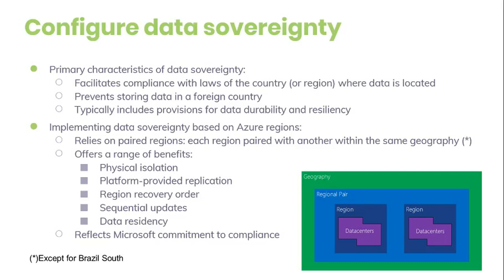The benefits of region pairing: The first benefit is physical isolation. When possible, Azure services prefer at least 300 miles of separation between data centers in the regional pair. Physical data center separation reduces the likelihood of all regions being affected simultaneously as a result of natural disasters, civil unrest, power outages, or physical network outages. Isolation is subject to constraints within the geography such as geographic size, power, and network infrastructure availability and regulation.